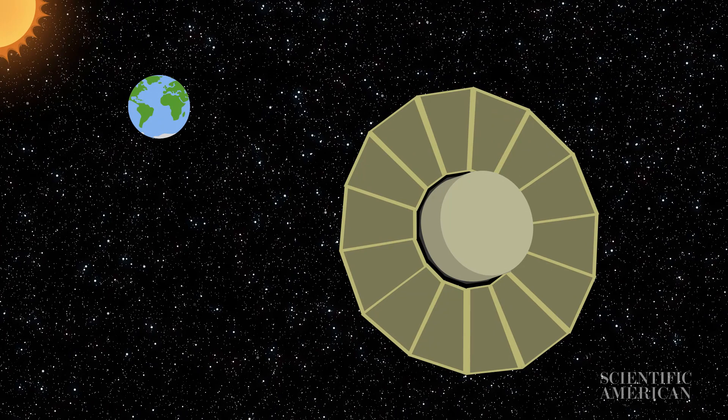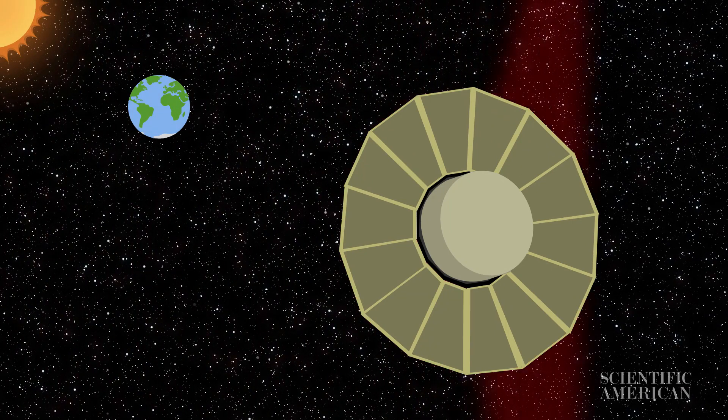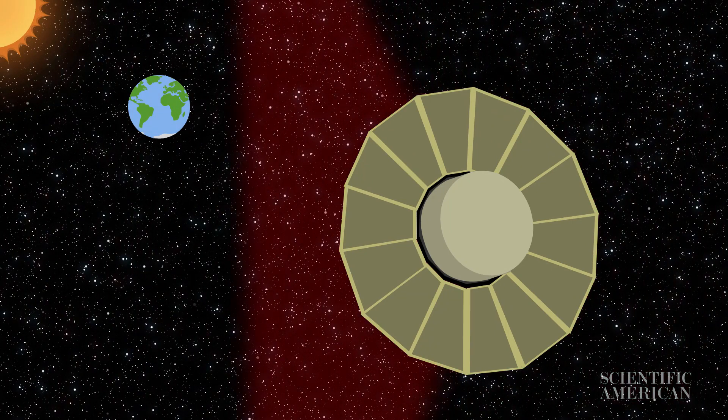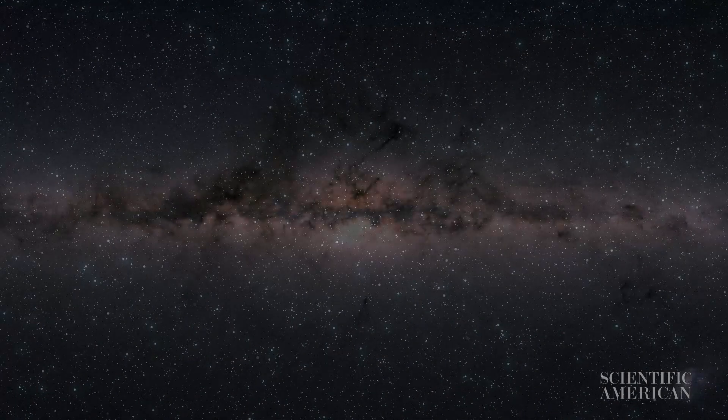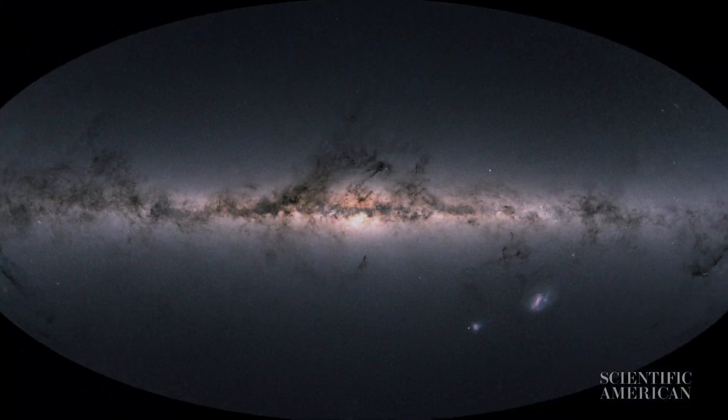Above the turbulence of Earth's atmosphere, Gaia has been plotting the distances to over a billion stars, creating a map of the Milky Way and some of its galactic neighbors.